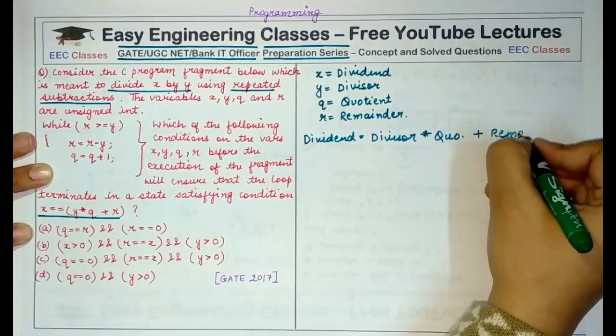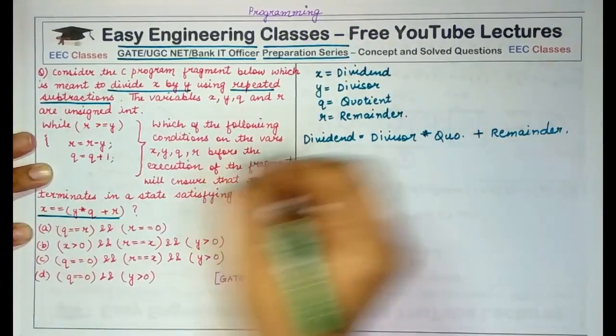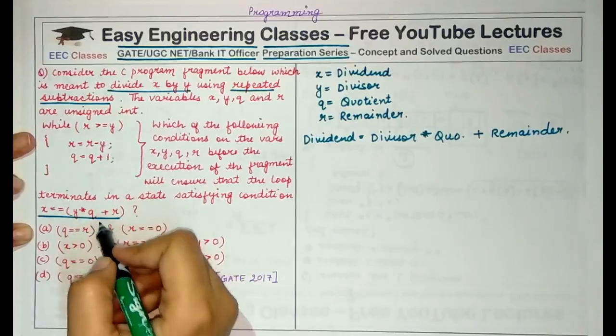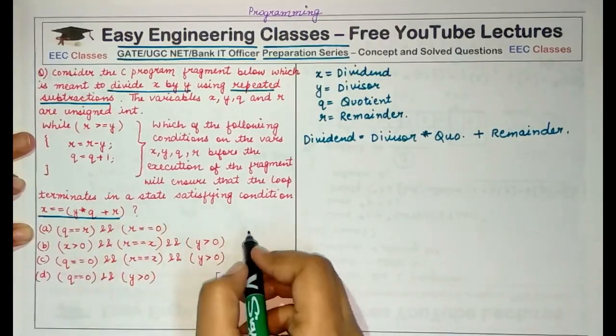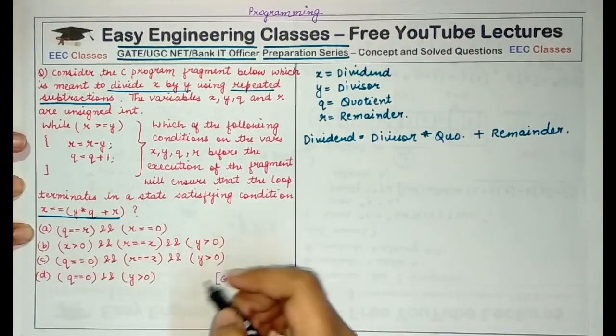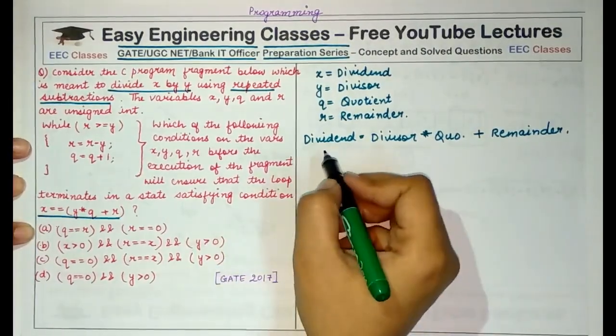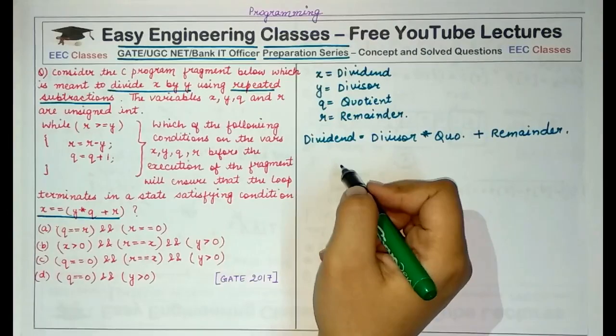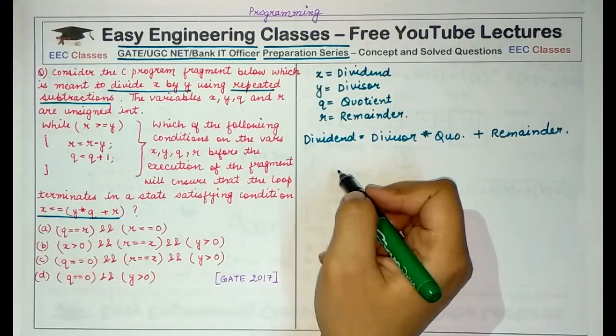So this is the condition that should hold at the end of this while loop. So what are the initial conditions that must be imposed before this loop? You have to perform division using repeated subtractions.